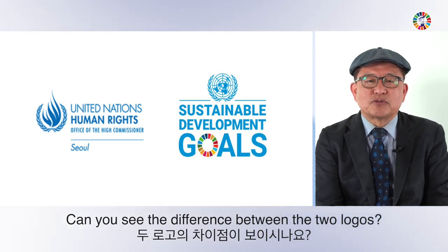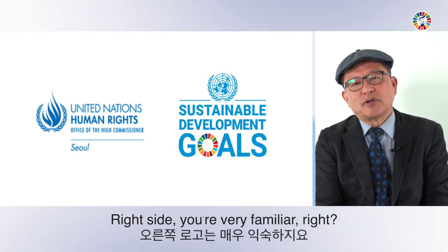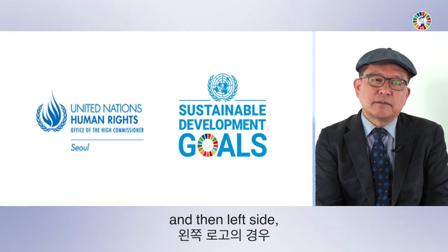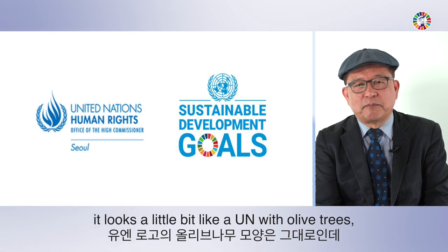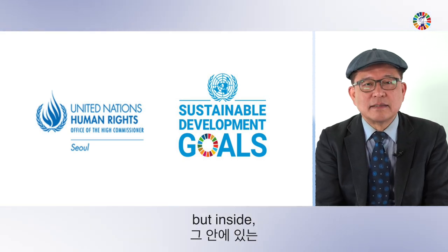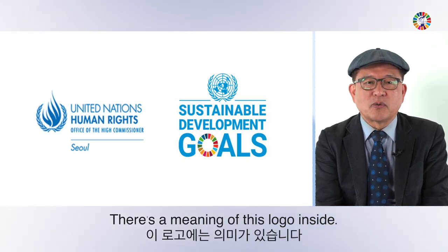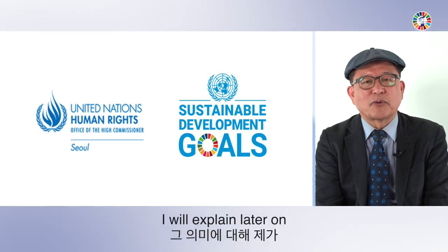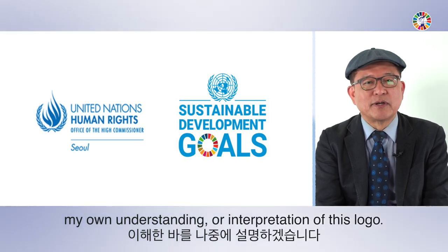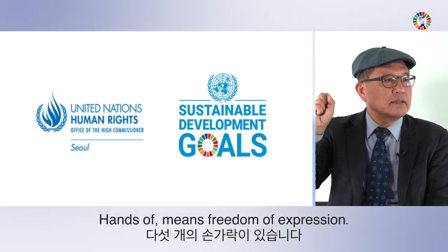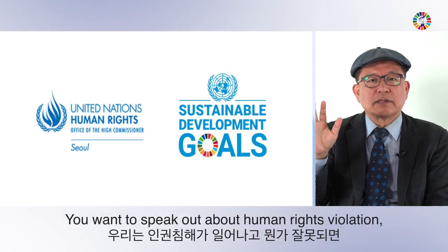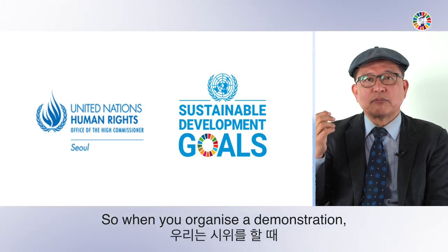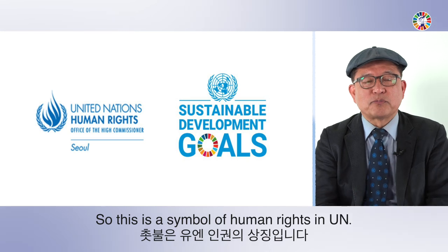Can you see the difference between the two logos? The right-hand side is the UN official logo — you'll see the five continents. The left-hand side looks a little like a UN logo because of the olive trees, but inside there are five flames. Always the human rights logo has five hands — hands up means freedom of expression, speaking out about human rights violations. Like a candle raised at a demonstration, this is the symbol of human rights at the UN.